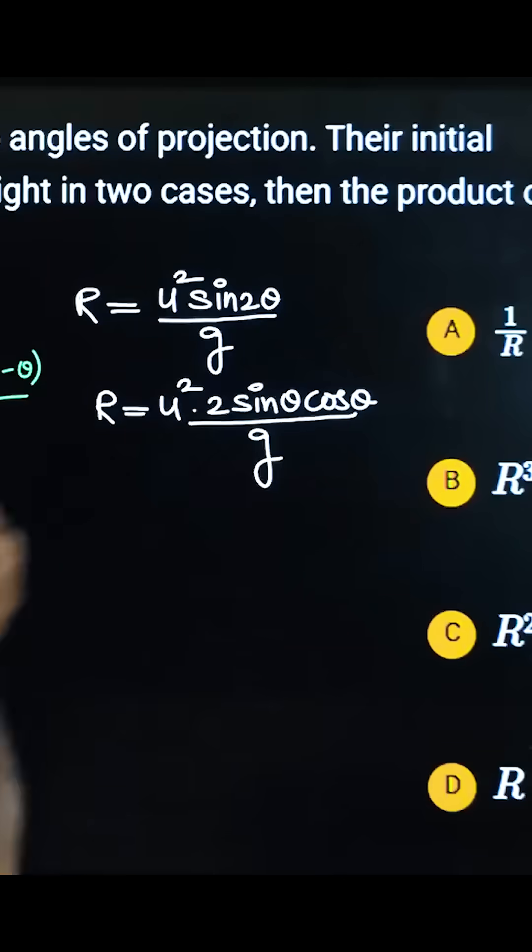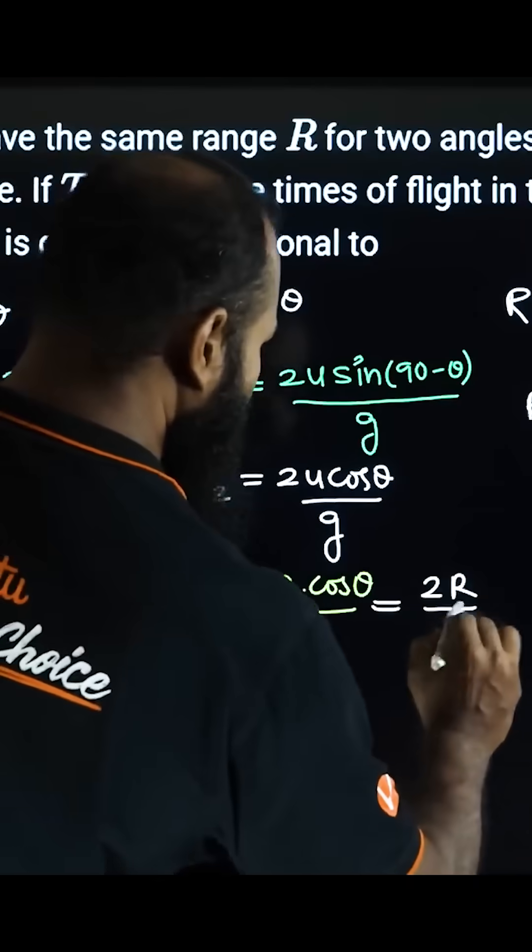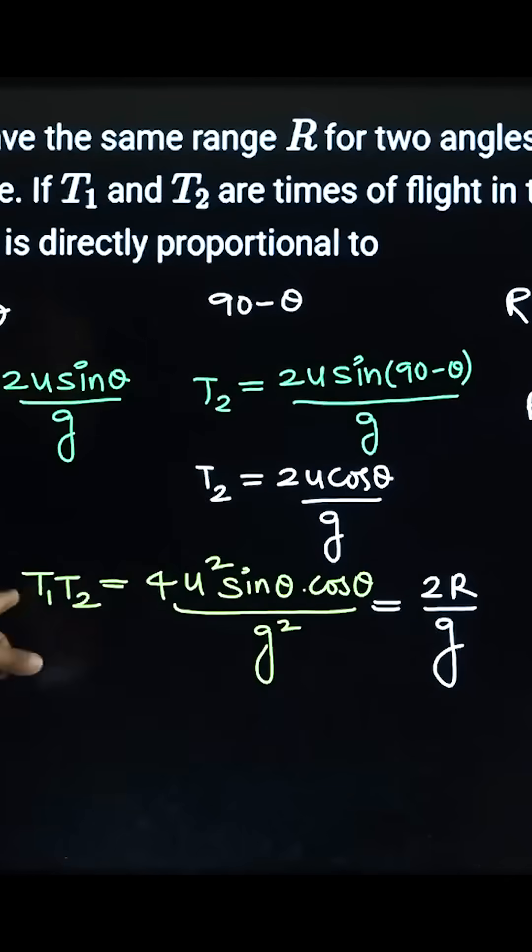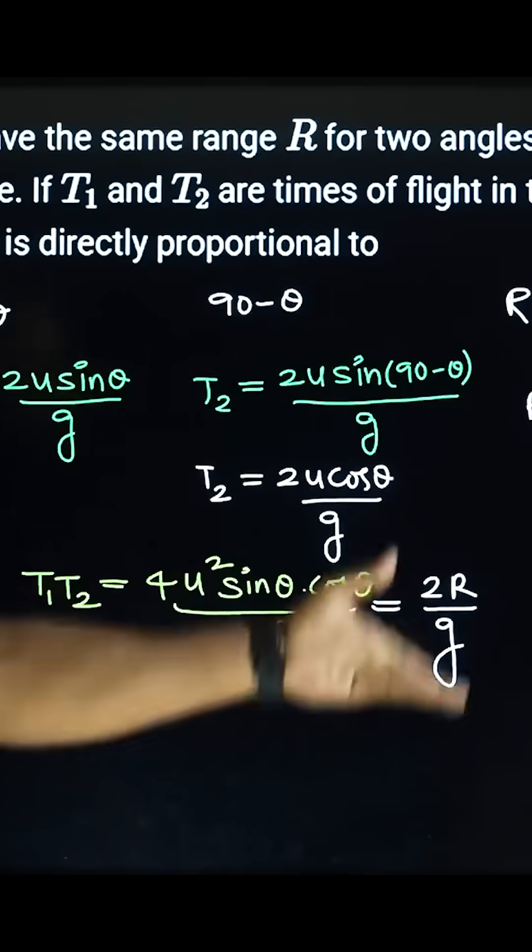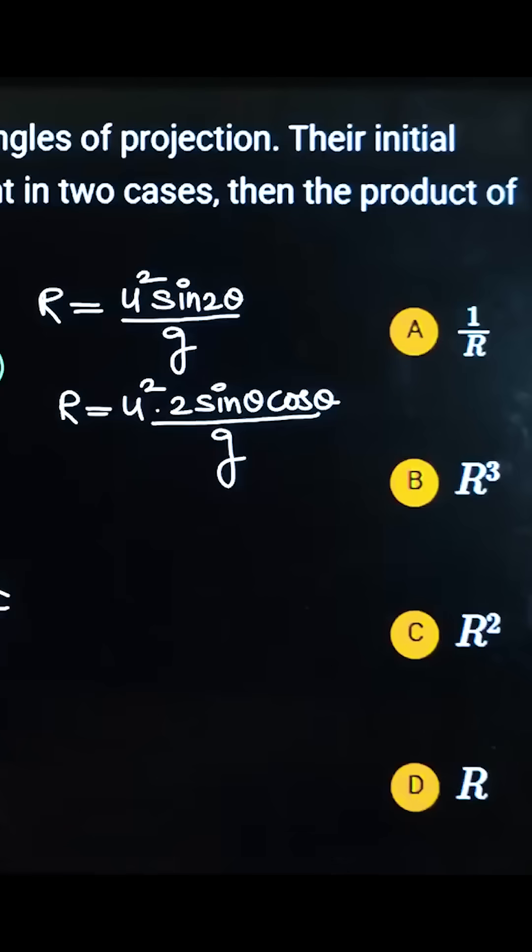u² sin θ cos θ times 2 over g is the range R. Therefore, T₁T₂ equals 2R over g, showing that T₁T₂ is proportional to R.